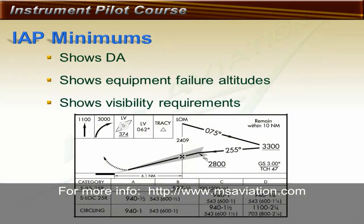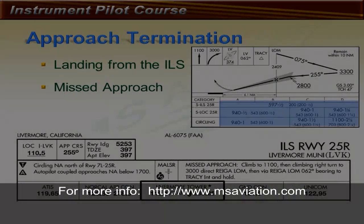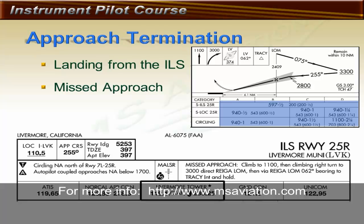The minimums section of the ILS appears at the bottom of the chart and includes the normal decision altitude and required in-flight visibility, as well as new minimums in the event of an outage of the glide slope, marker beacon, approach lighting system, or other equipment. Visibility can be shown in statute miles or as runway visual range (RVR). Upon arrival at the decision altitude, the pilot will either land or execute the missed approach. To descend below the decision altitude, the pilot must have a portion of the runway environment in sight and be in a position from which a normal landing can be made using normal maneuvers.